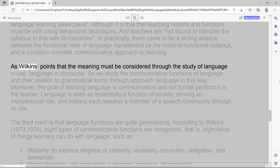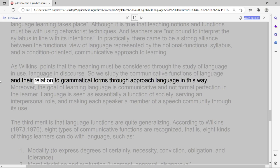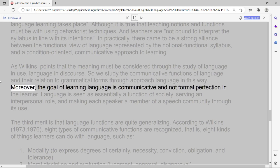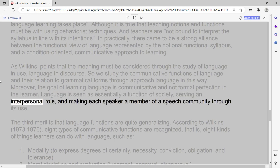As Wilkins points that the meaning must be considered through the study of language in use, language in discourse. So we study the communicative functions of language and their relation to grammatical forms through approach language in this way. Moreover, the goal of learning language is communicative and not formal perfection in the learner. Language is seen as essentially a function of society, serving an interpersonal role, and making each speaker a member of a speech community through its use.